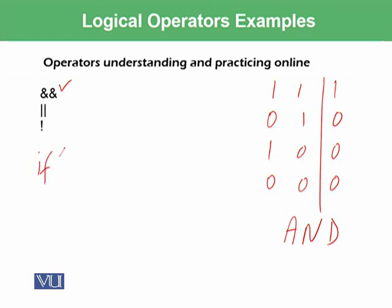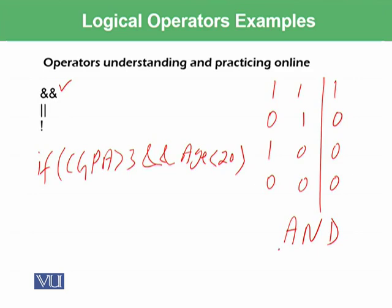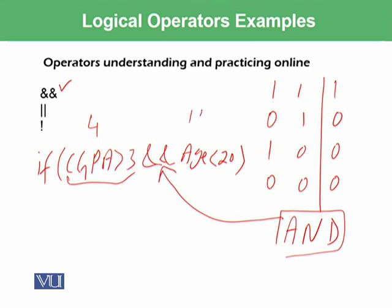So we write: if CGPA is greater than 3 and age is less than 20. The AND operator from computer architecture is replaced using these symbols — you write two ampersands (&&). This means if this condition is true, for example if CGPA is 4, this condition becomes true. And if age is 19, this condition is also true. If both conditions are true, we get the scholarship message.